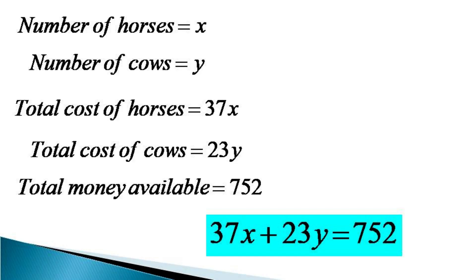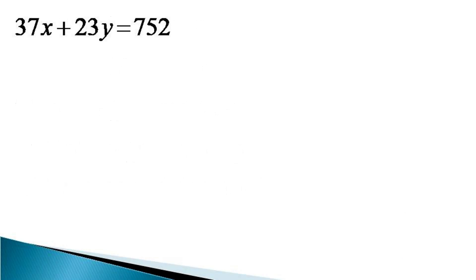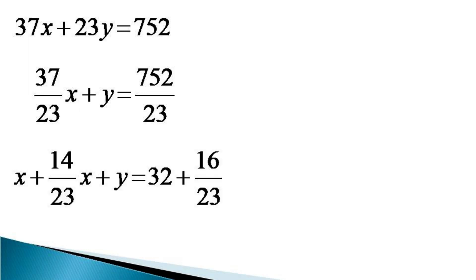To solve such equation, first we divide whole of the equation by the minimum coefficient of the variable. Here the minimum coefficient is 23 of variable y. The division results in an equivalent equation as 37 by 23x plus y is equal to 752 by 23. The fractions in the equation can be separated in the whole part and fractional part as x plus 14 by 23x plus y is equal to 32 plus 16 by 23.